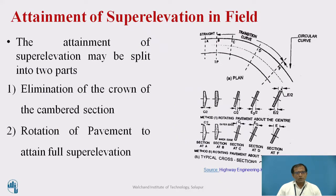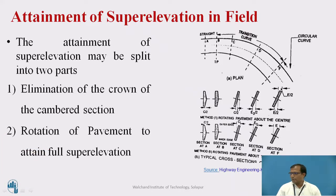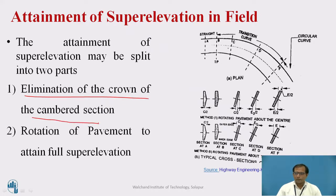Before we go into the Attainment of Super Elevation, let us understand how we are going to attain super elevation with this diagram. The attainment is going to be decided in two ways. First, we have to eliminate the crown of the camber section, and after elimination of the crown, we have to rotate the pavement to attain the full super elevation.